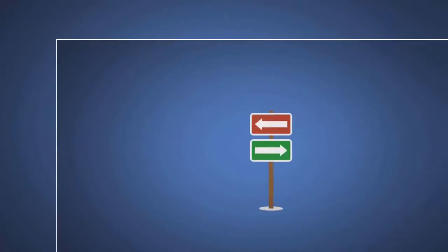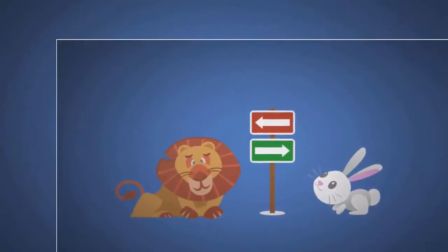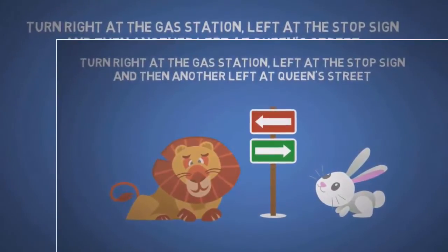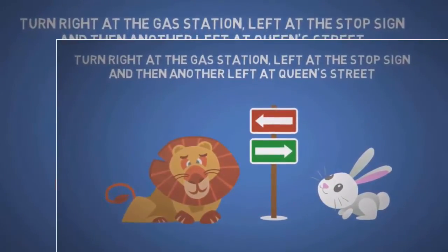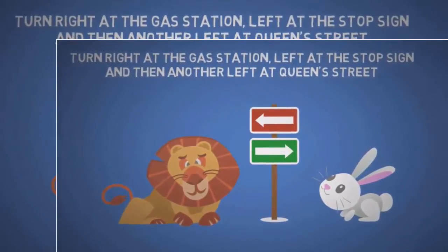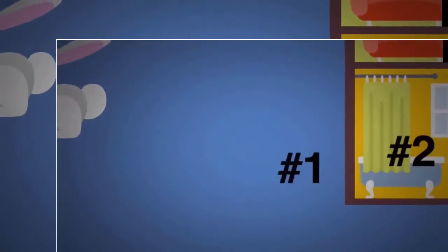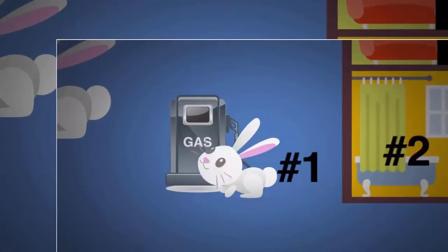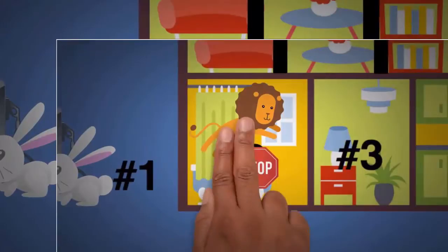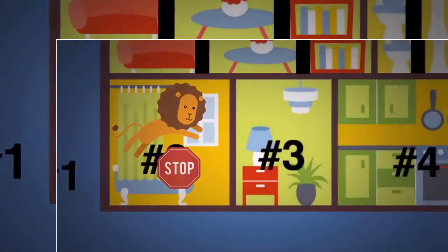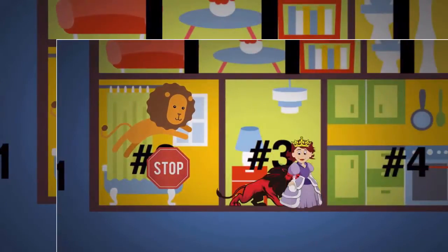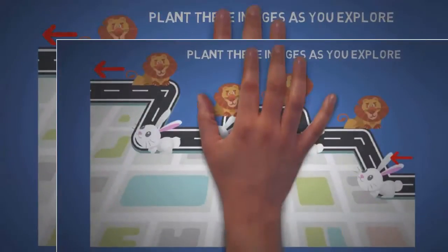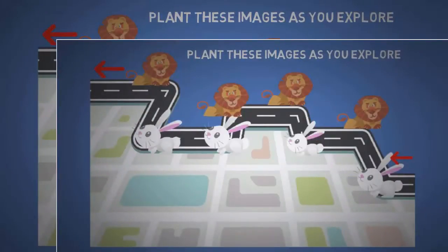To remember directions simply use two images like a rabbit representing right and a lion representing left. If you had to remember the directions turn right at the gas station, left at the stop sign, and then another left at Queen Street you can picture in your first room a rabbit hopping around a small gas pump station, then a lion jumping over a stop sign at your second, and then a lion about to attack a queen. These images can also be used as crumb trails or markers like when you're exploring a new place and want to make sure you can find your way back.